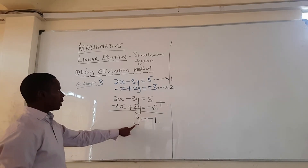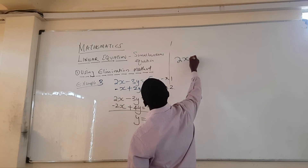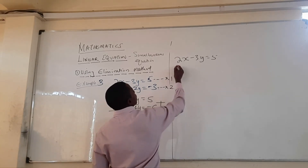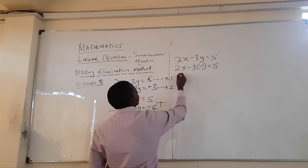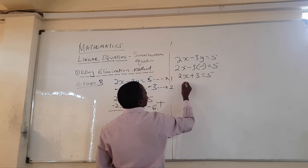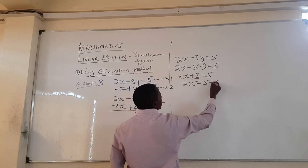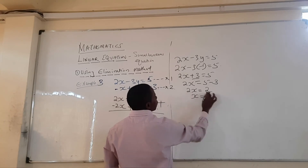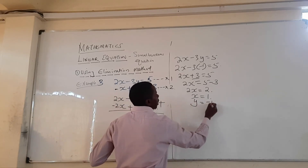Now that y equals minus 1, we use equation 1: 2x minus 3y equals 5. Replacing y with minus 1: 2x minus 3 times minus 1 equals 5, so 2x plus 3 equals 5. Then 2x equals 5 minus 3, which is 2. Dividing both sides by 2, we get x equals 1. So x is 1 and y is minus 1.